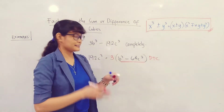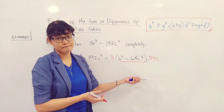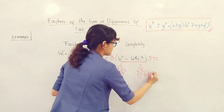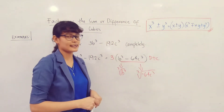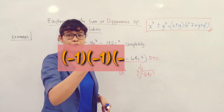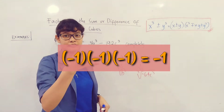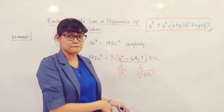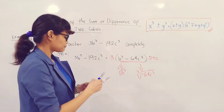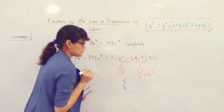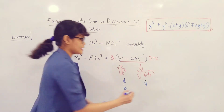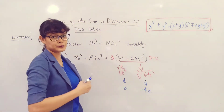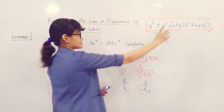Get the cube roots of each term: cube root of b cubed is b, and cube root of negative 64 is negative 4 — because a negative number does have a cube root. For example, negative 1 times negative 1 times negative 1 equals negative 1. So the cube root of negative 64c cubed is negative 4c.